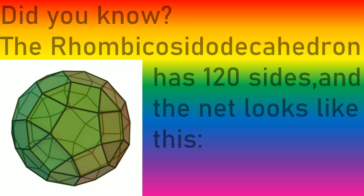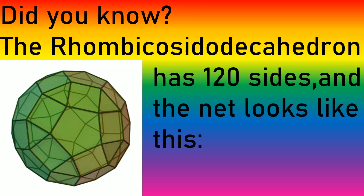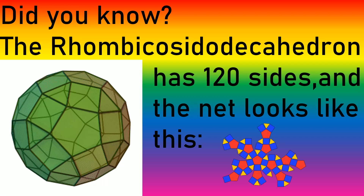Do you see this colossal looking object here? Did you know the Rhombicosidodecahedron has 120 sides, and the net looks like this. Amazing, right? That looks crazy!